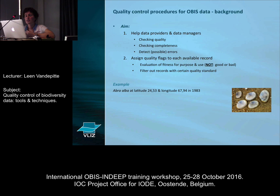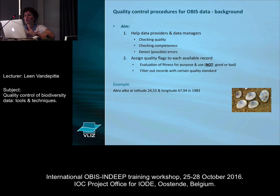Quality flags, if they are assigned on the OBIS database, are assigned to each available record. Although we call them quality flags, we don't really want to use them to say this record is good or bad. We want to use them to evaluate the fitness for purpose of a specific record so that it helps users to filter out records with a certain quality standard or a certain content.